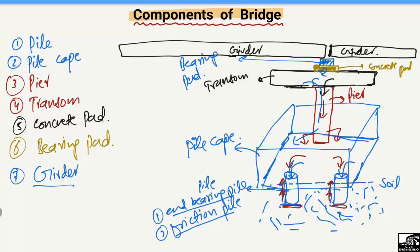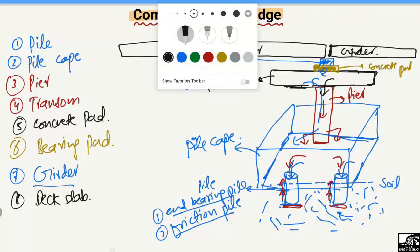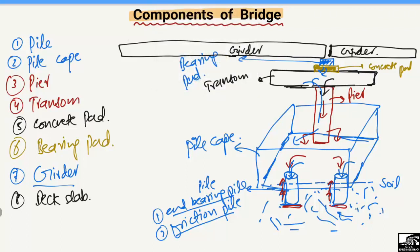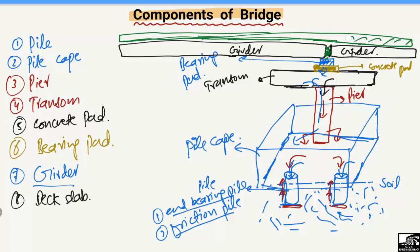After the girder, we construct another component known as the deck slab. This is a reinforced concrete slab placed on top of the girder to fill the gap between girders. It is a small-thickness reinforced concrete slab and is also a flexure member of the bridge.